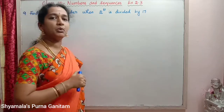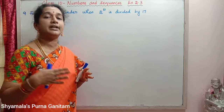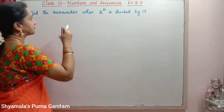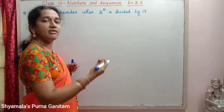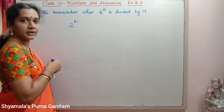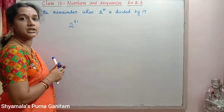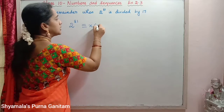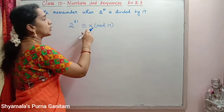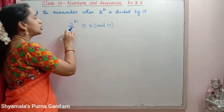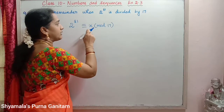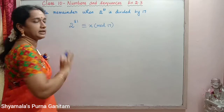So, finding 2 power 81 directly — that is 2 × 2 × 2, 81 times — finding the value is difficult. Instead of that, we will use a shortcut method. We can rewrite it using congruent modulo: 2 power 81 ≡ x (mod 17). This x is the remainder we are asked to find.